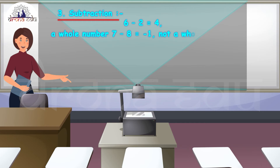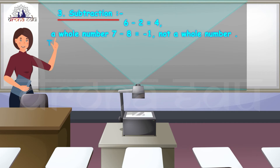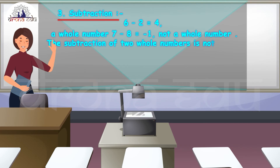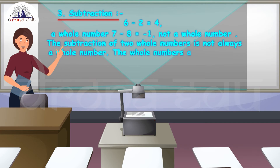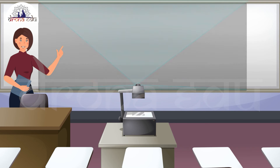Let me consider one more example: 7 minus 8, which equals minus 1. But minus 1 is not a whole number — it is a negative number. So I can see that the subtraction of two whole numbers is not always a whole number. Therefore, whole numbers are not closed under subtraction.